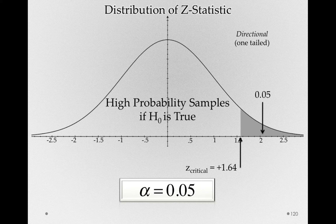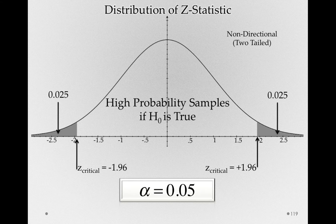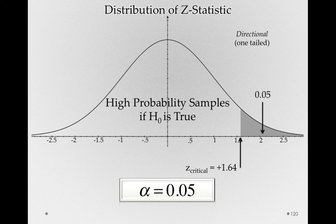Notice what happens to the critical value on the upper side. Our z-critical in the positive direction was positive 1.96 when we used a non-directional, or two-tailed, hypothesis. If we're using a directional hypothesis — that is, a one-tailed test — then our z-critical shifts towards zero. That is, it's positive 1.64.